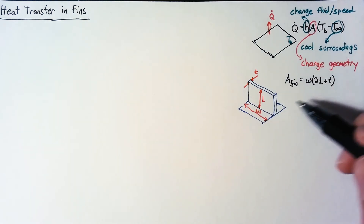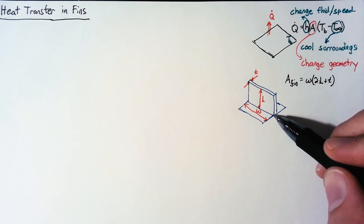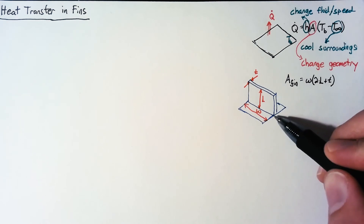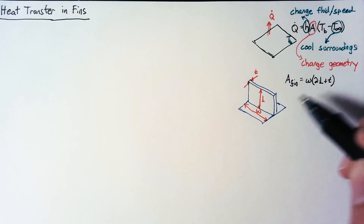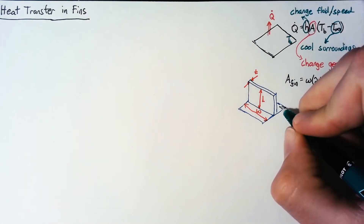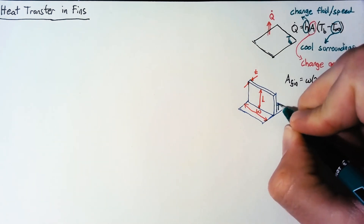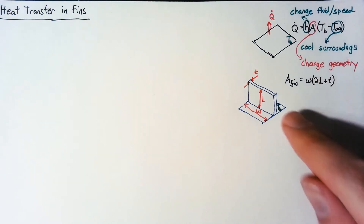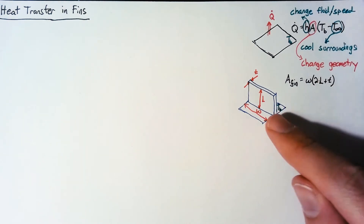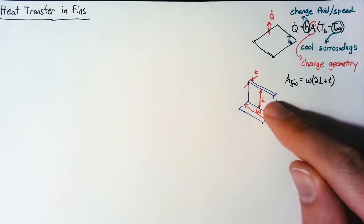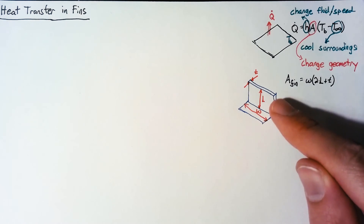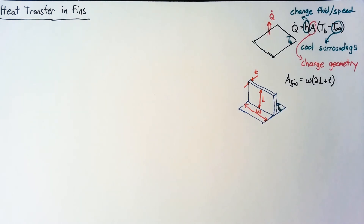An issue we have is that once this fin is in place, the entirety of the fin isn't going to be at that base temperature. The bottom is at the base temperature, but because convection is cooling the fin as we go up, we will have a decrease in temperature along the length.